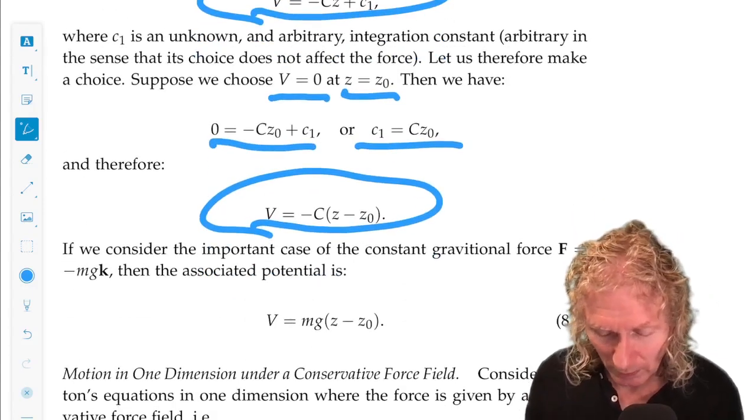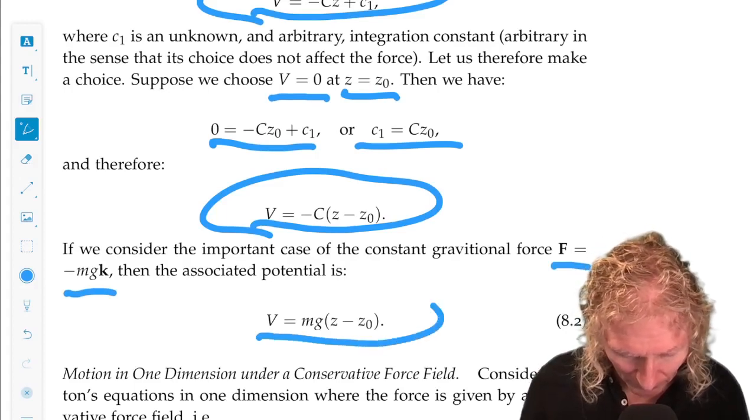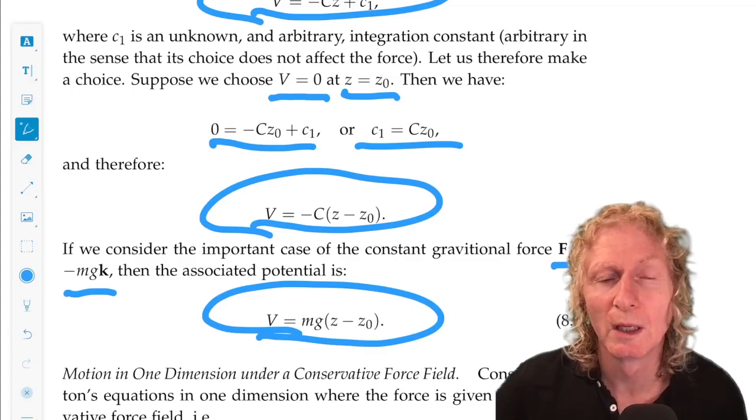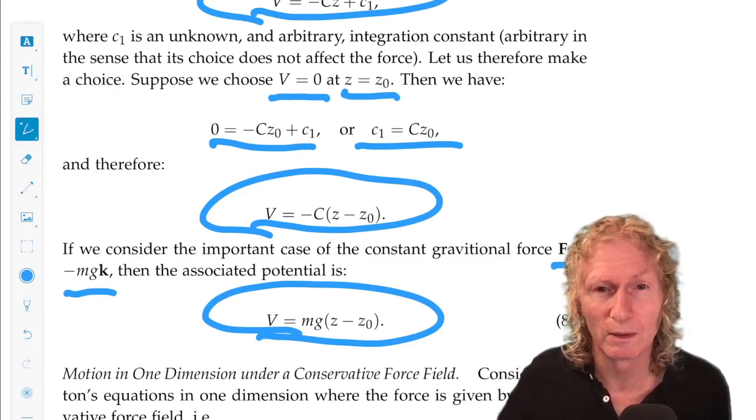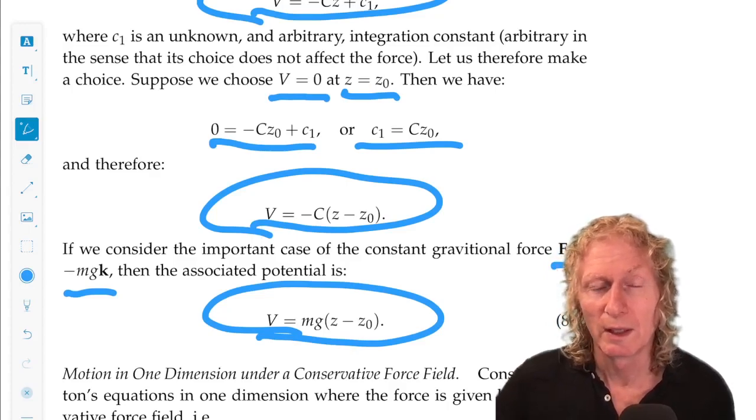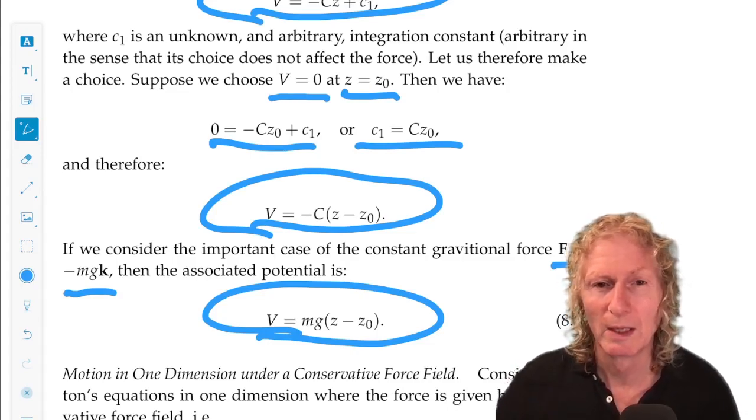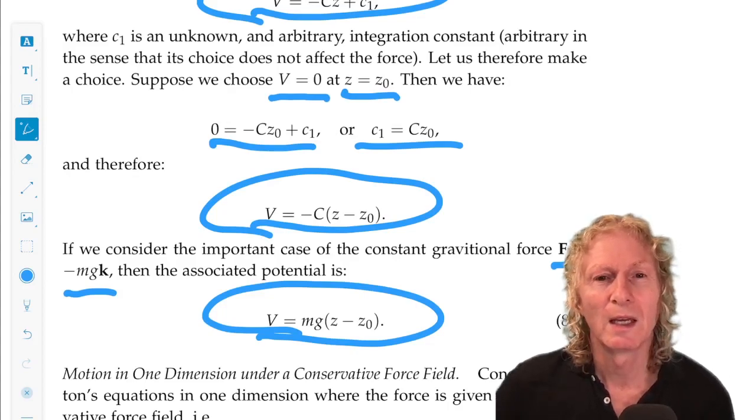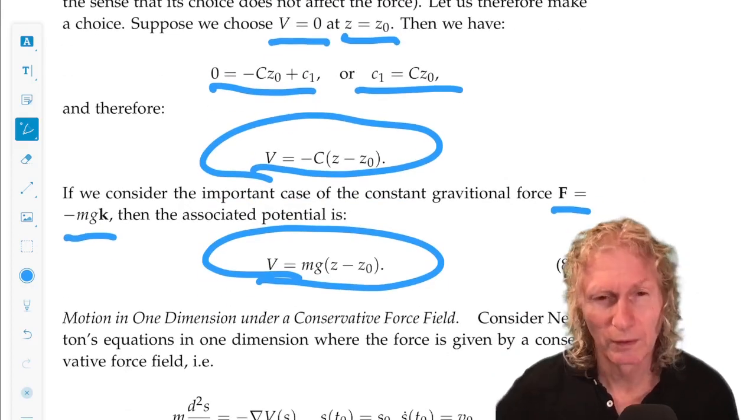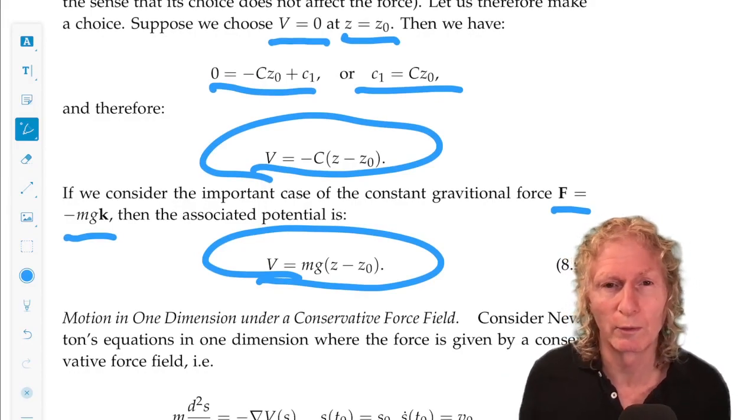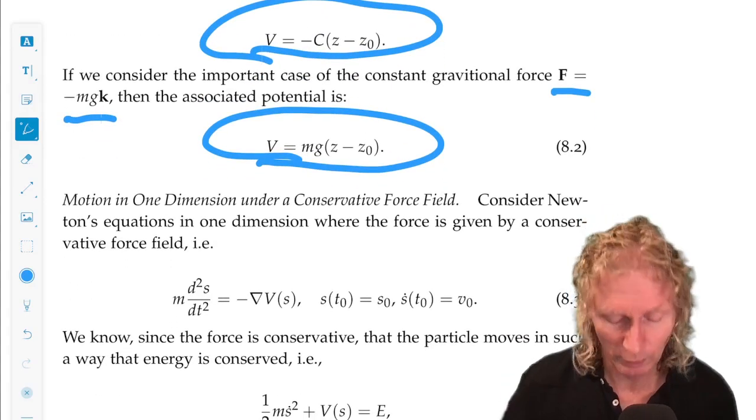Now if we restrict ourselves or consider the special case of the force being minus mgk, we see that the potential energy in this case is mg(z - z0). Often we take the potential energy to be, we orient our coordinate system so that z0 is zero, at the origin of our coordinate system. And then we would just have V equals mgz. Another way of saying that is the potential energy would be zero on the surface of the earth if we think of a projectile problem or an inclined plane problem where a particle slides down to the surface of the earth.